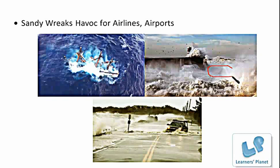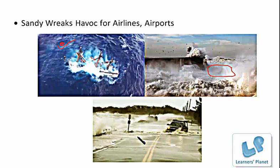Here you can see some devastating pictures of Hurricane Sandy which affected a lot of properties. You can see the tropical storm and the high winds at very high speed. Here you can see a boat which is drowned and a road on which Hurricane Sandy struck, with a car being swept off the road.